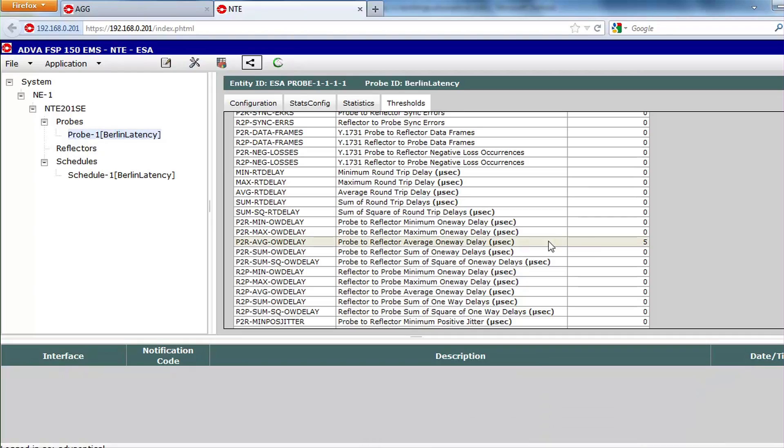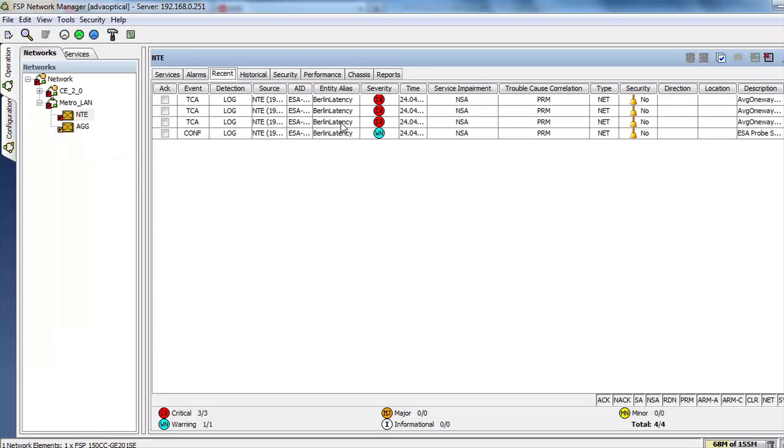Like with mobile backhaul, also business Ethernet and wholesale Ethernet applications need precise information about what is happening in the network. With the FSP Network Manager, you have complete visibility. You can see exactly where the problems are and resolve them before they become service-effective.